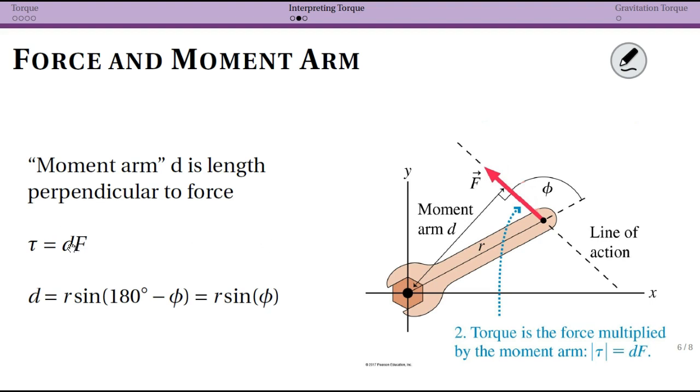So in this case again, it's going to be D, our moment arm, times force, but we want to relate D back to R. Note again that you have a right triangle, and again in this case it's going to be R times sine of 180 minus phi, which gets you back to sine phi.